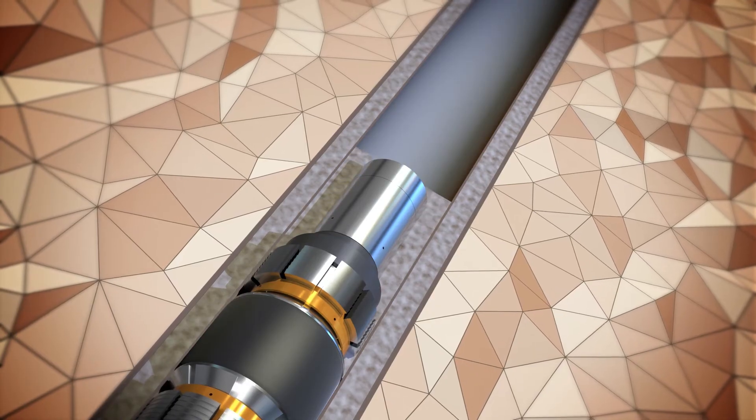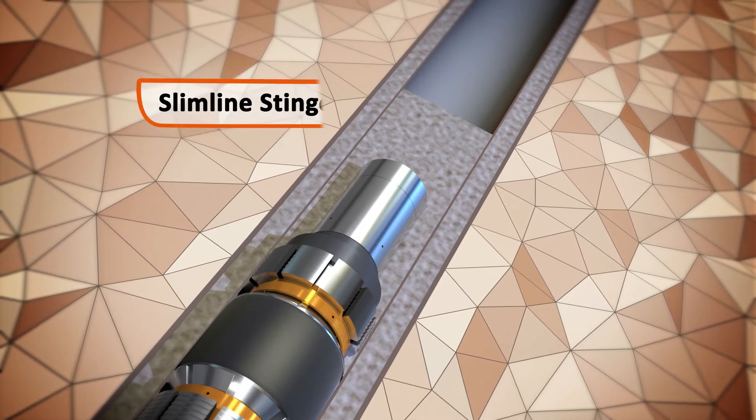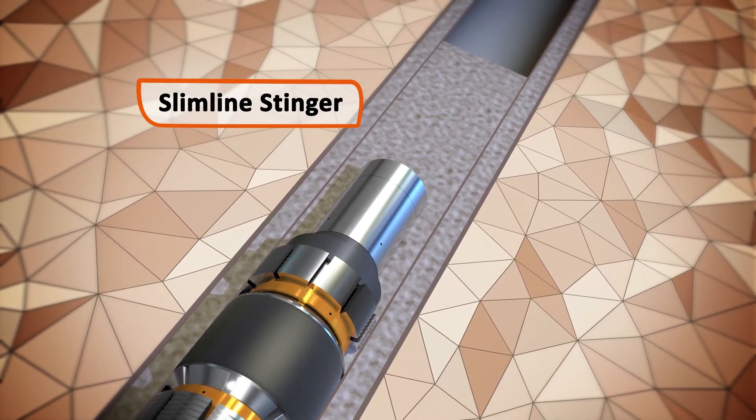Additional cement can then be placed on top of the CX sliding valve using the slimline stinger.